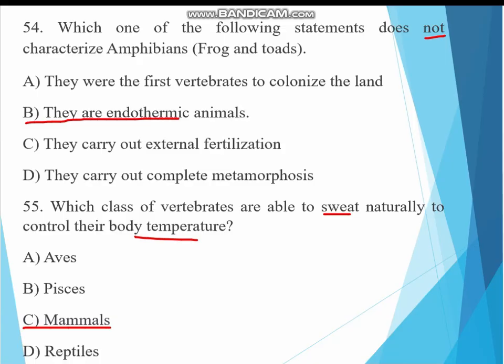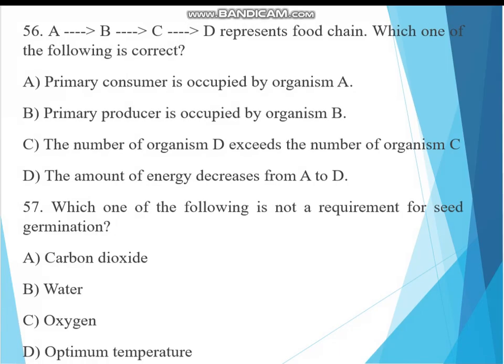Question 56. A to B to C to D represents a food chain. Which one of the following is correct? A. Primary consumer is occupied by organism A. B. Primary producer is occupied by organism B. C. The number of organism D exceeds the number of organism C. D. The amount of energy decreases from A to D. The answer must be D, the amount of energy decreased from A to D. From A to D the energy will be decreased and also the number will be decreased. The primary producer is A. The answer is D.